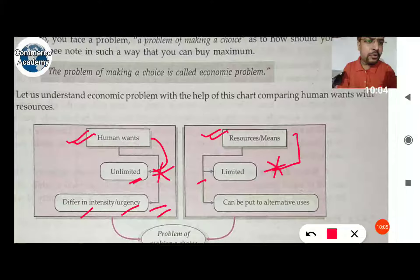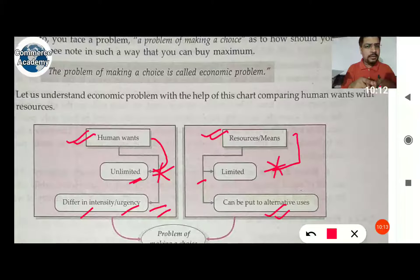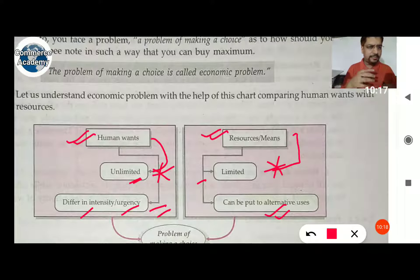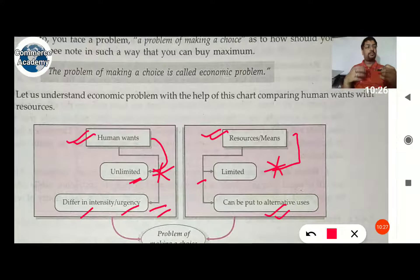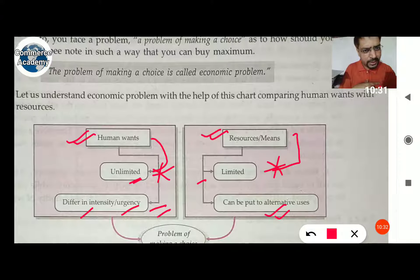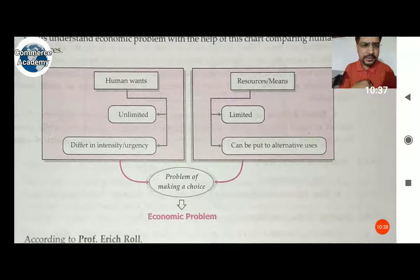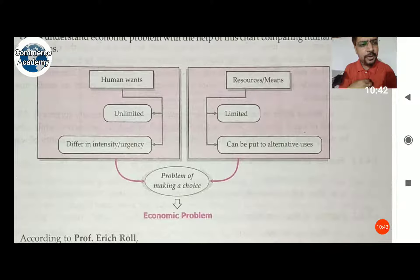Resources can be put to alternative uses. Due to unlimited wants, we select the urgent requirements. Resources can be allocated to alternative choices, and we try to select the alternative use of resources that creates more satisfaction. All of these things are related to choice, so the core principle here is the problem of choice.